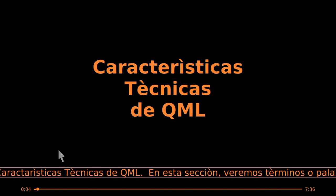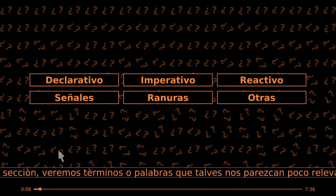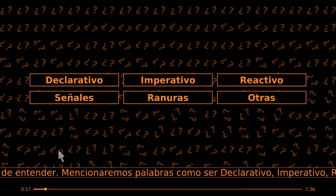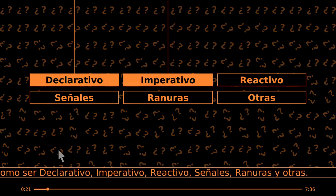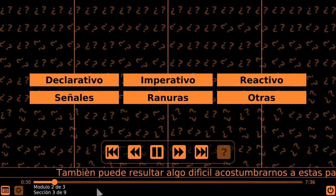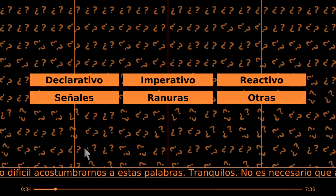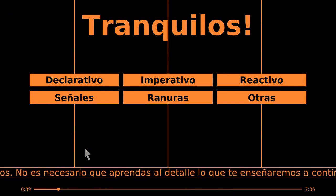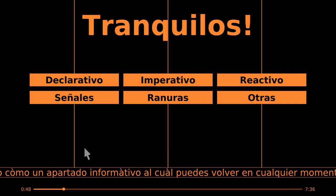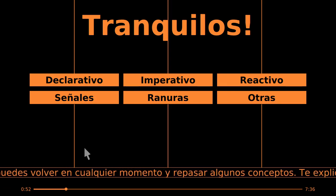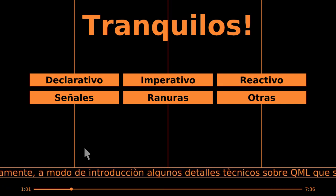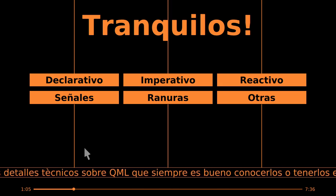Características técnicas de QML. En esta sección veremos términos o palabras que tal vez nos parezcan poco relevantes o difíciles de entender. Mencionaremos palabras como ser declarativo, imperativo, reactivo, señales, ranuras y otras. También puede resultar algo difícil acostumbrarnos a estas palabras. Tranquilos, no es necesario que aprendas al detalle lo que te enseñaremos a continuación. Tómalo como un apartado informativo al cual puedes volver en cualquier momento y repasar algunos conceptos. Te explicaremos mínimamente a modo de introducción algunos detalles técnicos sobre QML que siempre es bueno conocerlos o tenerlos en cuenta.